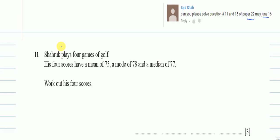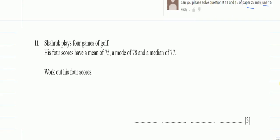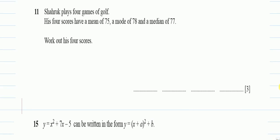Welcome to this video on question number 11 and 15 of Paper 2, May/June 2016, which is a request of Ikra Shah. Let's start. Shahrukh plays four games of golf. His four scores have a mean of 75, a mode of 78, and a median of 77. Work out his four scores.